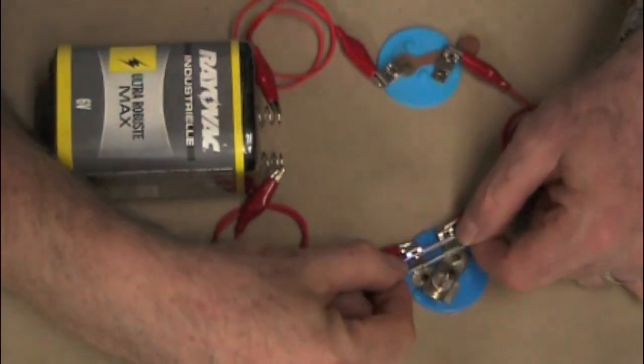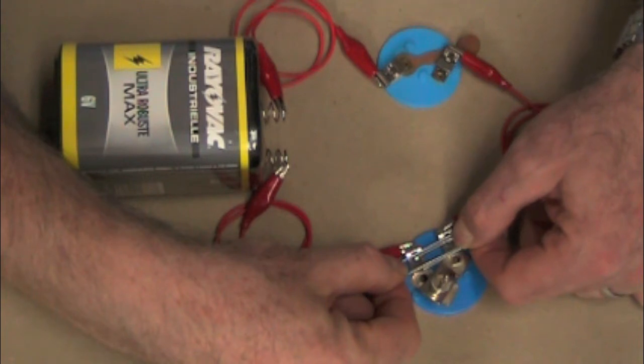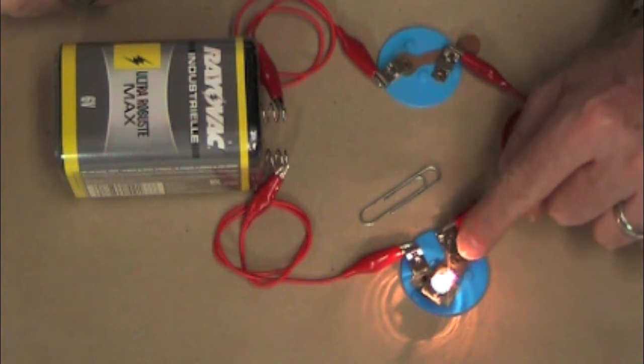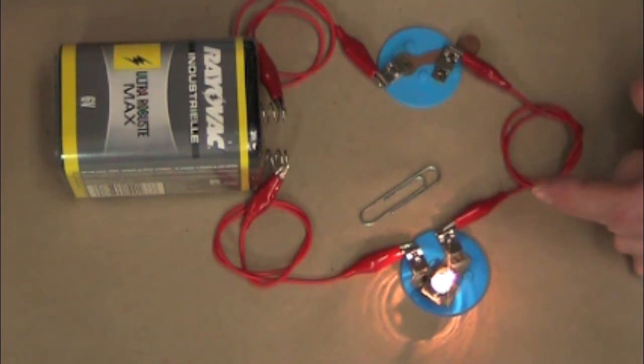I'm going to take the paper clip and put it right on top of the clothespin clips. And you'll notice the light bulb goes out. The reason that the light bulb goes out is because it's easier for the electricity to go through the conductor than it is to go through the resistor. The resistor actually pushes back a little bit. Get it? Resistor.